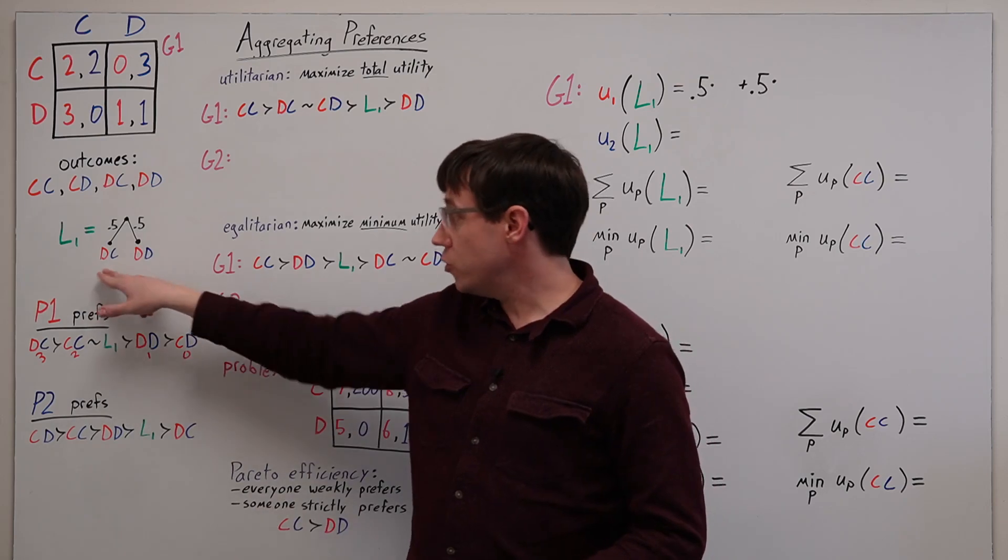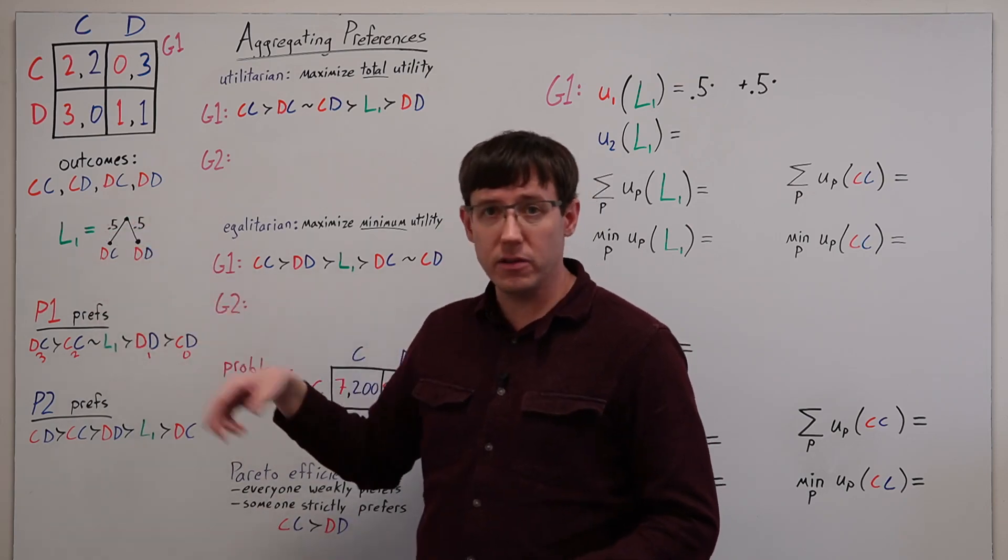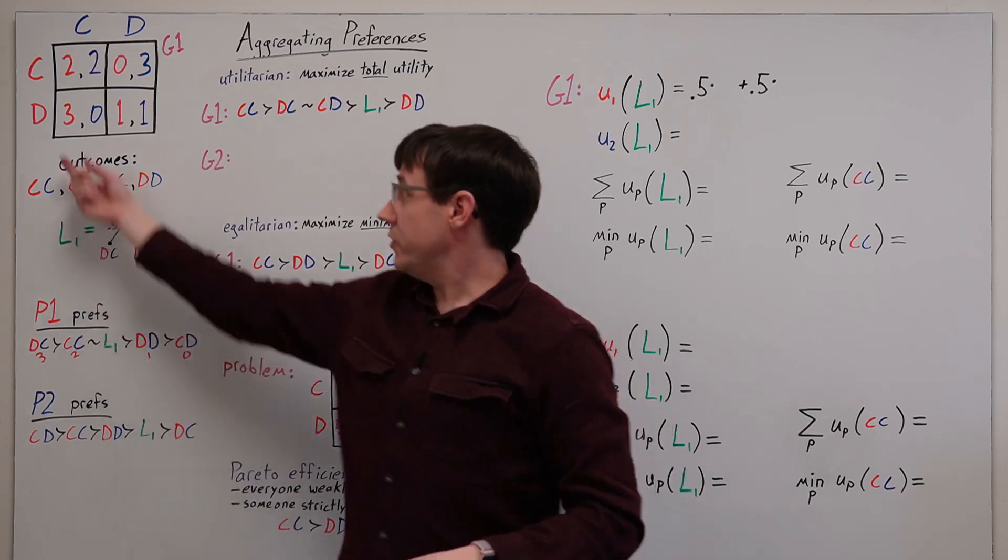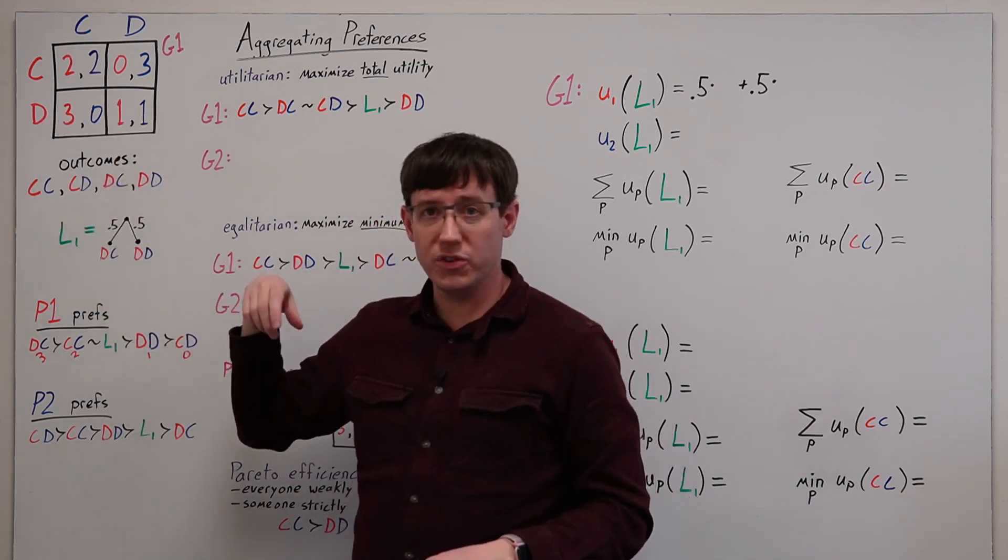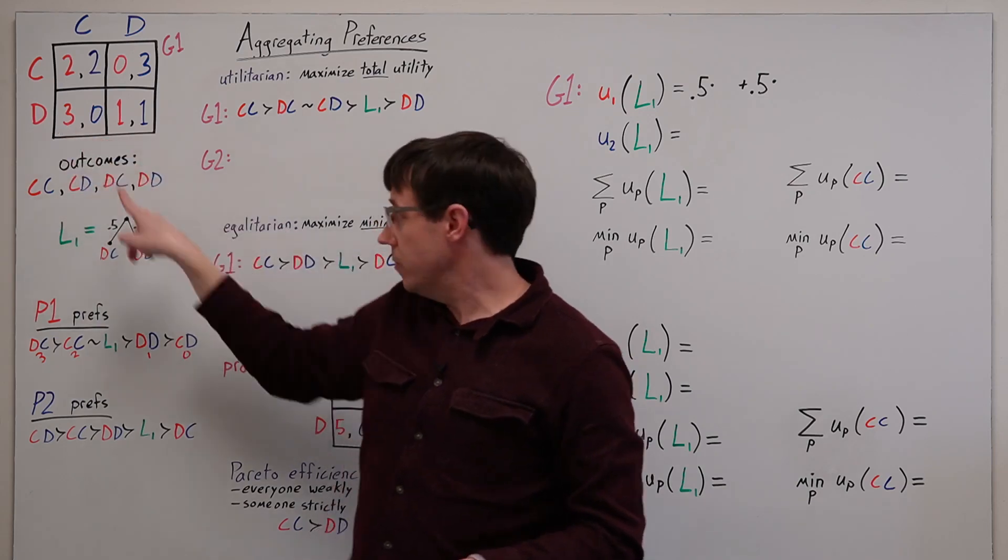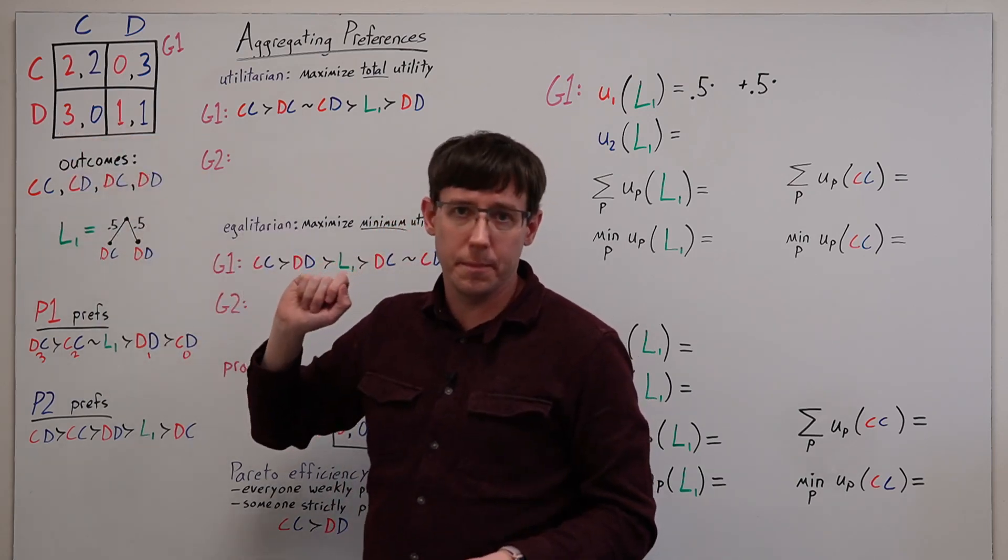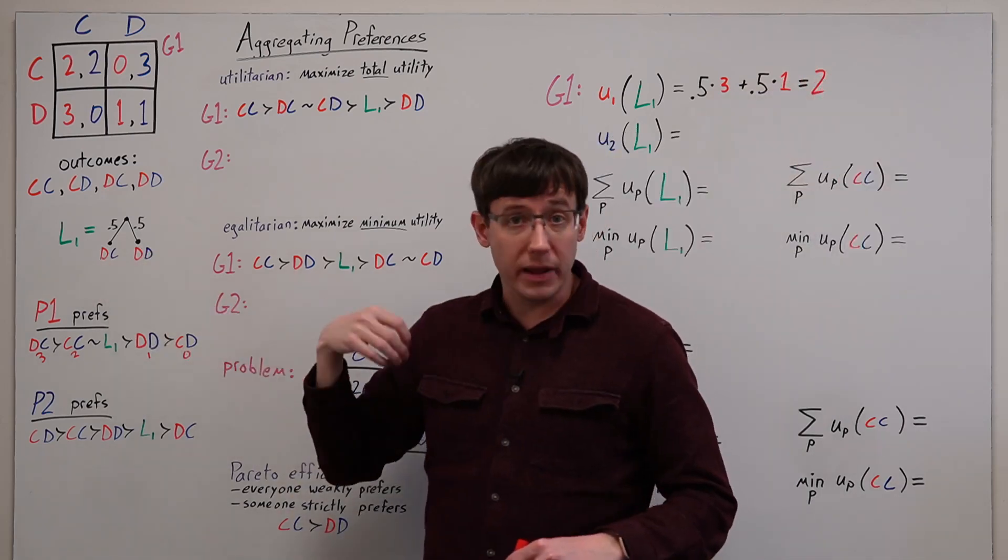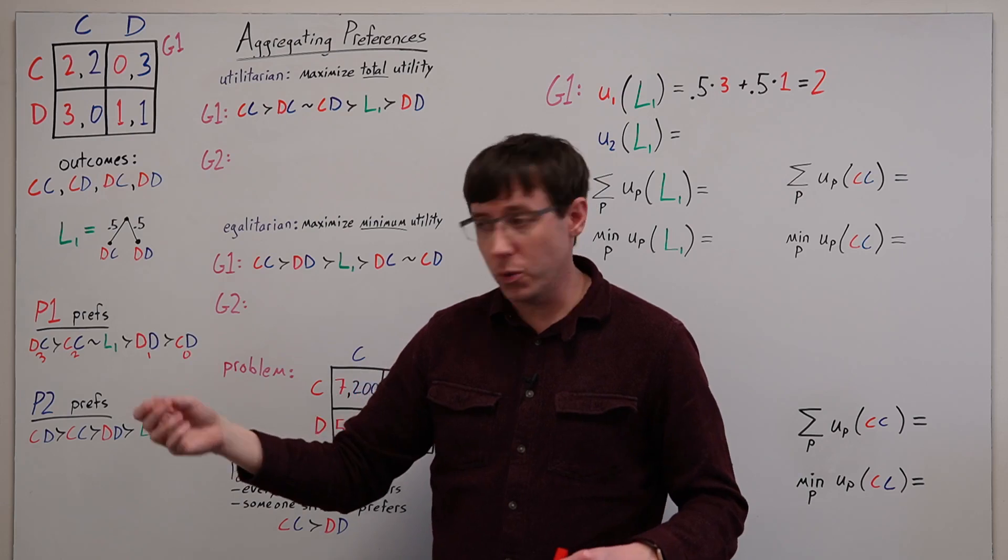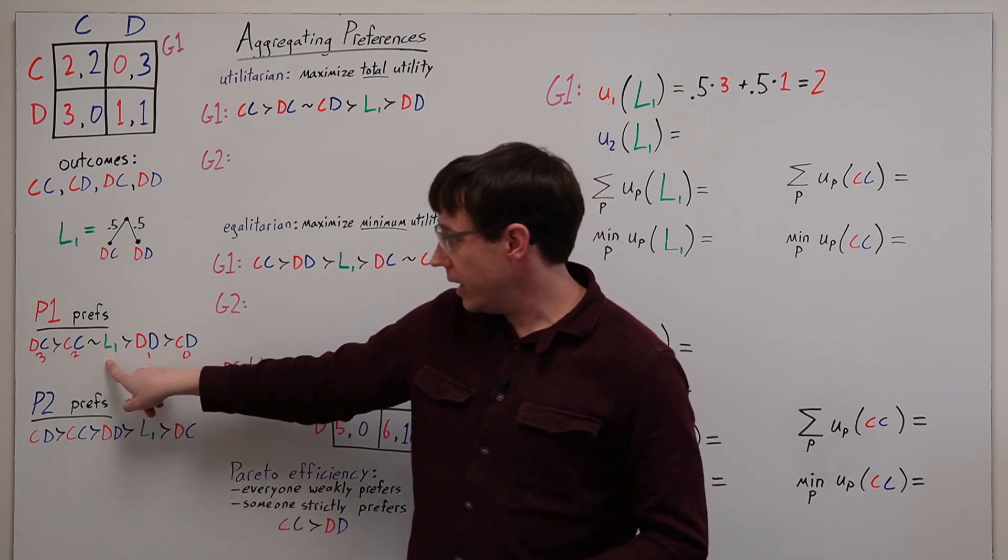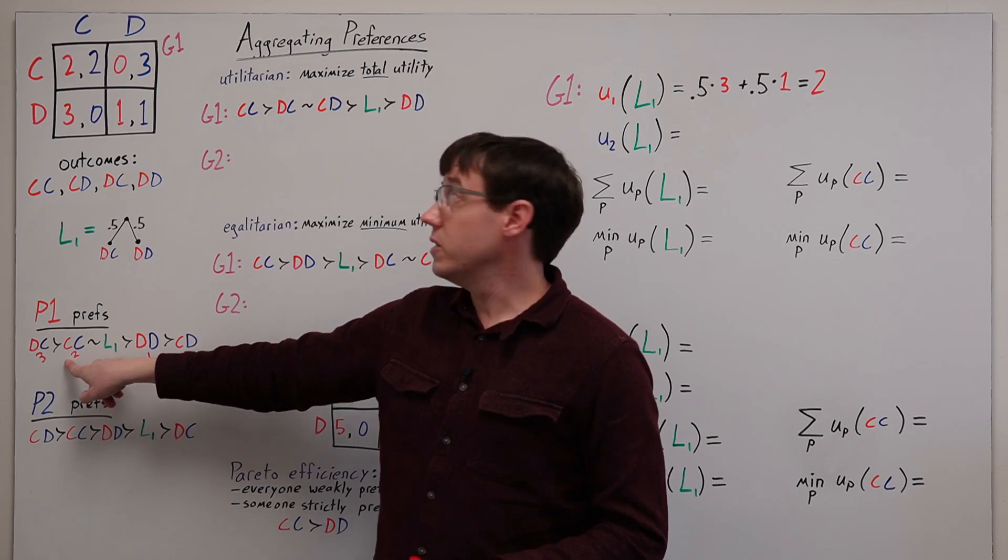And to figure out player 1's expected utility, we just need to add up the probability of each outcome times player 1's utility in that outcome. Since this lottery has two outcomes with a 0.5 chance, we'll add up 0.5 times player 1's utility in each of those circumstances. So here, player 1 gets a utility of 3, and here they get a utility of 1. And so in expectation, this lottery gets player 1 a utility of 2, making them indifferent between the lottery and the outcome CC, which also gets them a utility of 2.